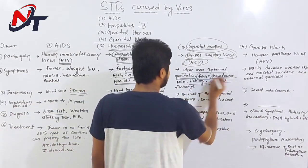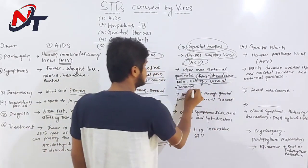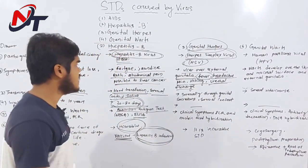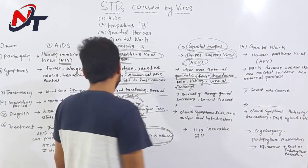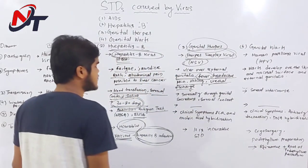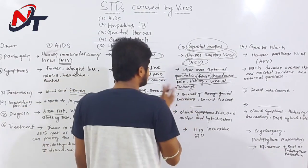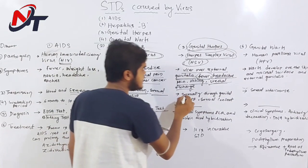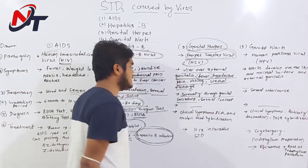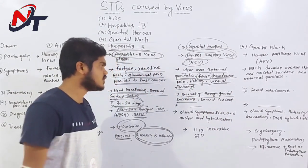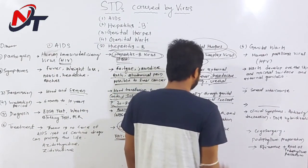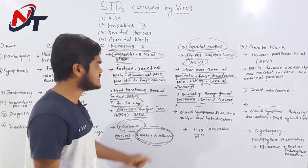The symptoms include fever, headache, pain, and urinary discharge — all are symptoms of genital herpes. For transmission: since it is a sexually transmitted disease, it is transmitted through genital secretion and sexual contact.